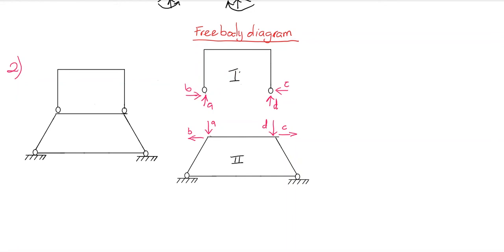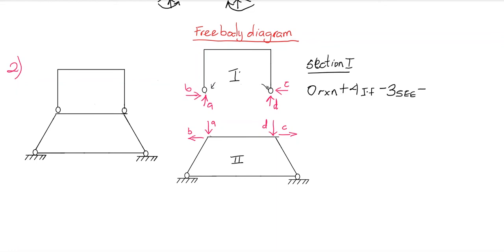For section I, the number of reactions is zero, plus four internal forces, minus three static equilibrium equations, minus zero conditional equations — because there are no hinges in section I. This gives us one degree of static indeterminacy for section I.